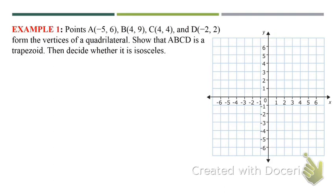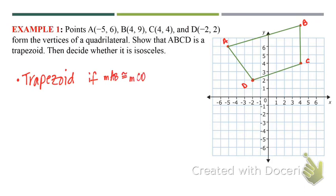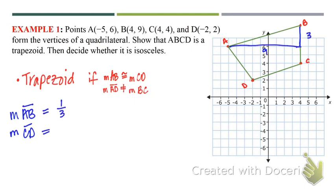We're going to plot all of these points to form a quadrilateral, then show that it is a trapezoid, and then decide whether it is isosceles. To show whether it is a trapezoid, the two sides that appear to be parallel are AB and DC. We're going to find the slope of AB, which is 3 over 9, which is 1/3. And then DC is 2 over 6, which is also 1/3. So we know that they are parallel, meaning it's a trapezoid.